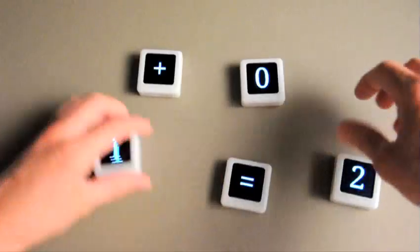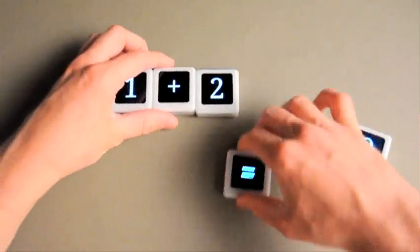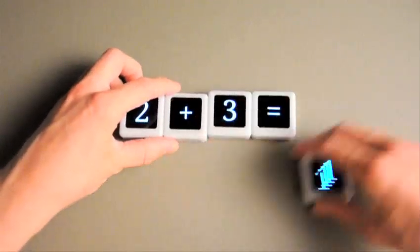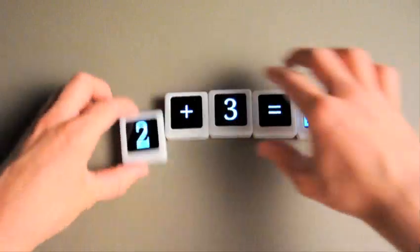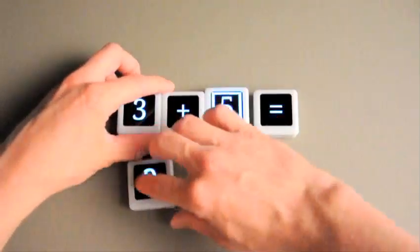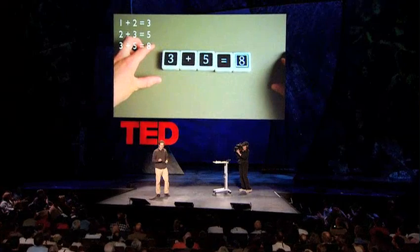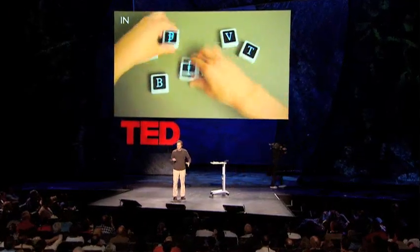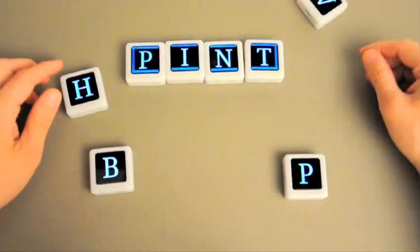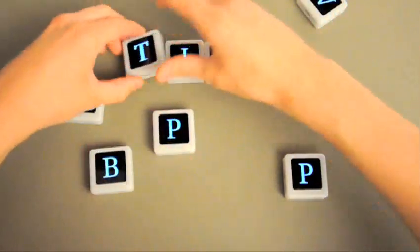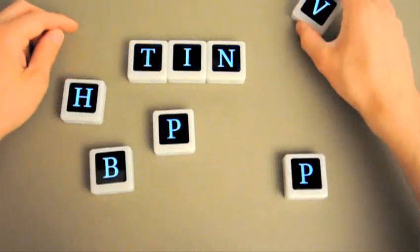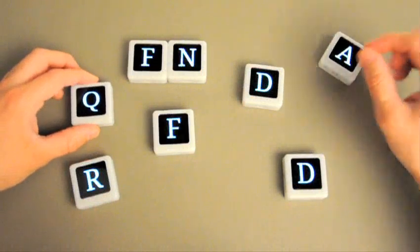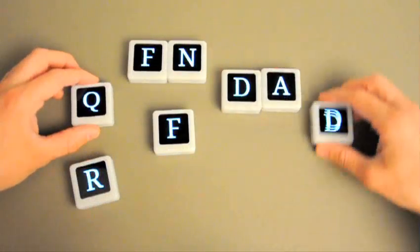There are also some neat possibilities for education, like language, math, and logic games, where you want to give people the ability to try things quickly and view the results immediately. This is a Fibonacci sequence that I'm making with a simple equation program. Here we have a word game that's kind of like a mashup between Scrabble and Boggle. Basically, in every round, you get a randomly assigned letter on each siftable. As you try to make words, it checks against the dictionary. Then after about 30 seconds, it reshuffles, and you have a new set of letters and new possibilities to try.